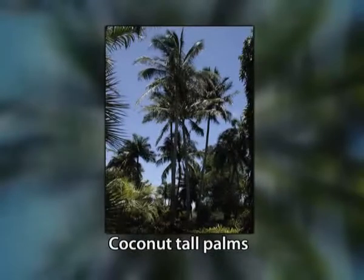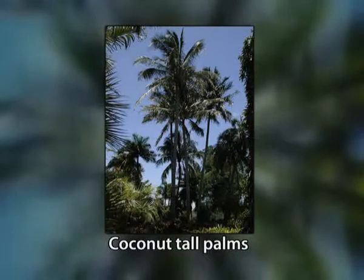The major classification of coconut based on height is: first, tall palms, sometimes referred to as variety typica. They are widely planted both for household and commercial use and grow to a height of 20 to 30 meters. They are slow maturing and flower six to ten years after planting. They are normally cross pollinating and therefore considered to be heterozygous.